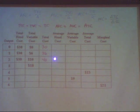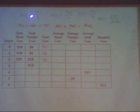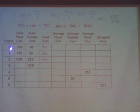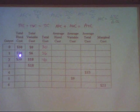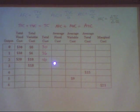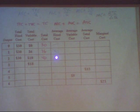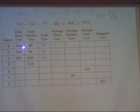If I want to calculate the average fixed cost, the formula is the total fixed cost divided by the quantity. Average fixed cost would be 30 divided by zero, then 30 divided by one, then 30 divided by two. 30 divided by two is 15, 30 divided by one is 30. 30 divided by zero is undefined — you can't divide by zero.